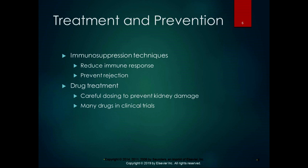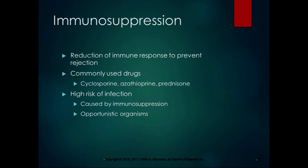In order to treat and prevent organ rejection, they use immunosuppression to reduce the immune response and prevent rejection, accomplished through drugs. There are lots of different immunosuppressant drugs in clinical trials, and they're also used for autoimmune disorders, which we'll talk about in the next section. People who are immunosuppressed have a high risk of infection — totally makes sense, because opportunistic organisms recognize when the immune system is down.